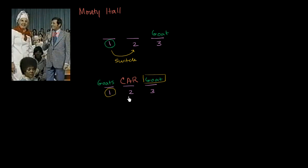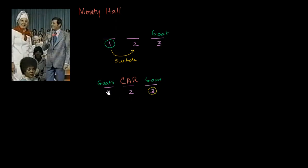In that case, it would probably be good for the person to switch. If the person picks door number two, we as the game show can show either door number one or door number three, and it actually does not make sense for the person to switch. If they picked door number three, we have to show door number one, and in that case it makes a lot of sense for the person to switch.